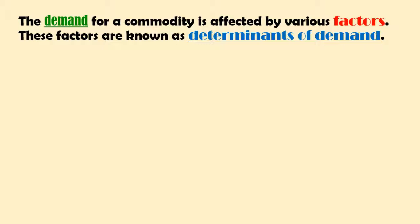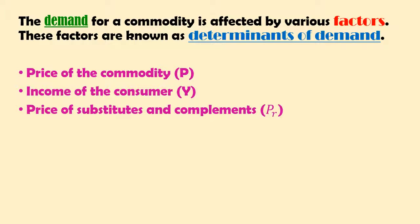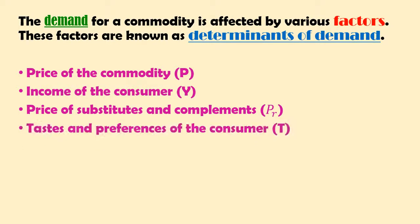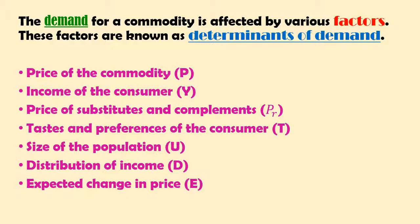The first factor is price of the commodity, denoted by P. The next factor is income of the consumer, denoted by Y. Then price of substitutes and complements, denoted by PR. Tastes and preferences of the consumer, denoted by T. Size of the population, denoted by U. Distribution of income, denoted by D. And expected change in price, denoted by E. These are the determinants of demand.